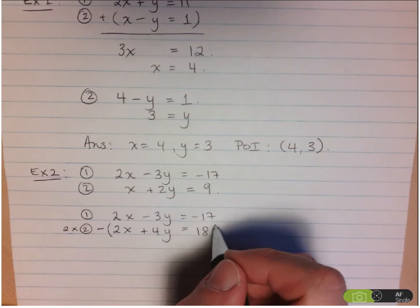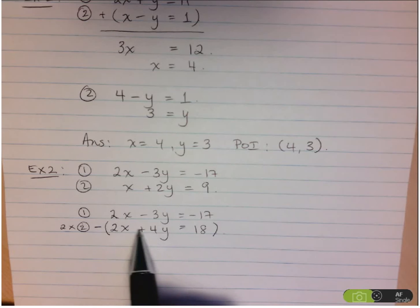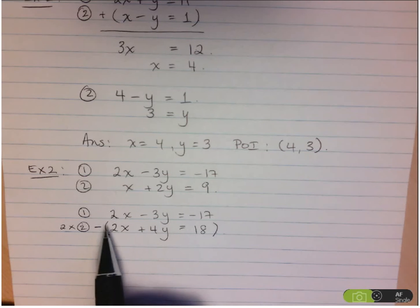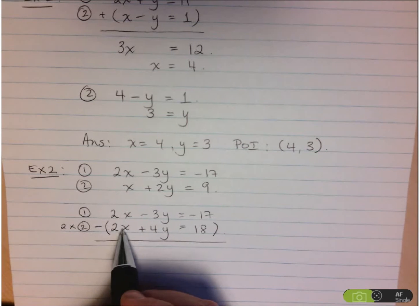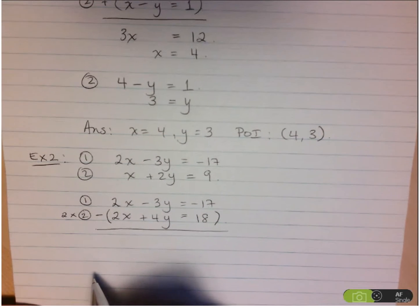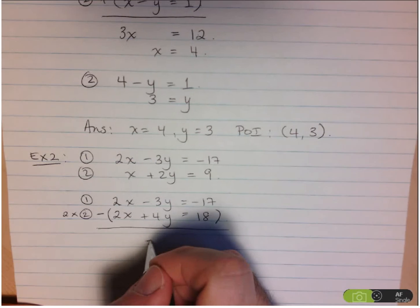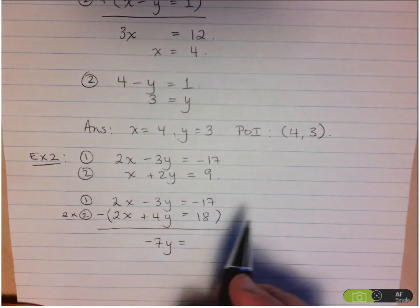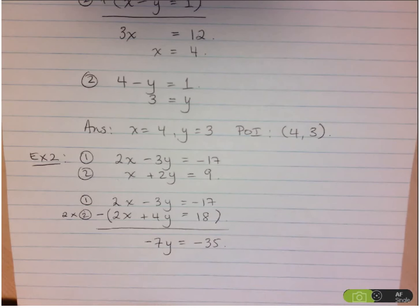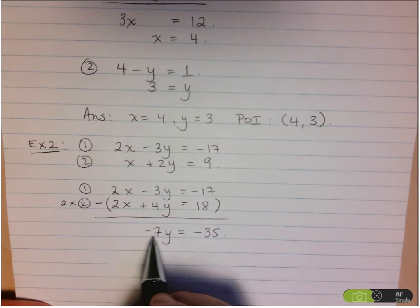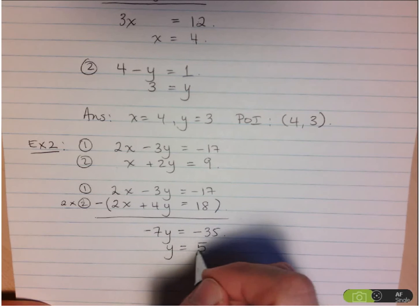I put brackets around the second equation to remind me that I'm subtracting everything in it. So 2x minus 2x is 0 — I've succeeded in eliminating a variable. Then negative 3y minus 4y is negative 7y. And negative 17 minus 18 is negative 35. So negative 7y equals negative 35, which gives y equals negative 35 divided by negative 7, equal to 5.